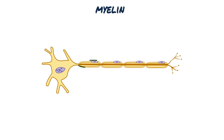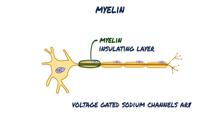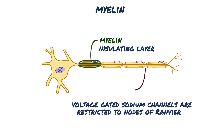Myelin is an insulating layer, or sheath, that forms around nerves. In myelinated axons, voltage-gated sodium channels are restricted to gaps in the myelin sheath called nodes of Ranvier. The extracellular fluid is in contact with the axon membrane only at the nodes.